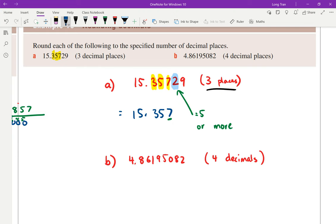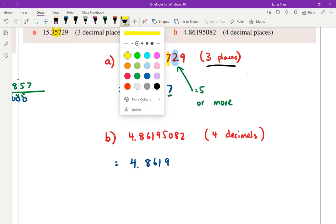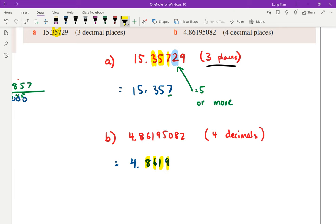We're listening. Good. For 4.86195082, they want you to round it to four decimal places. So the numbers you'll be working with are 4.8619 - that's four decimal places: one, two, three, four. But then you need to check the next digit.